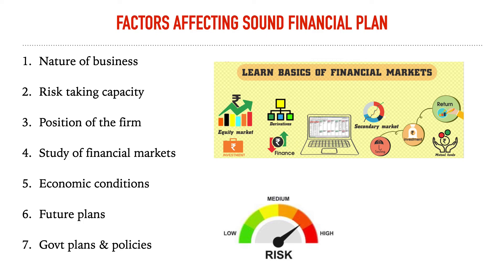The seventh factor is government plans and policies. With each party coming to power, new regulations and rules are made. For example, the current government introduced the New Education Policy. Each government makes changes according to changing market situations, living standards, purchasing power, and exchange rates. Wherever your business is situated — whether India, USA, Germany, or France — you need to be aware of that respective government's plans and policies with respect to your business or industry.